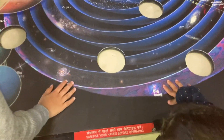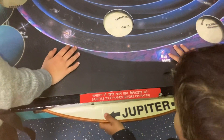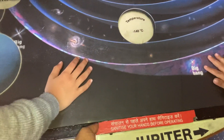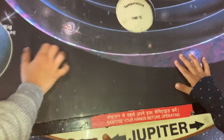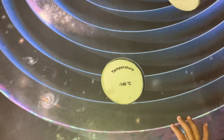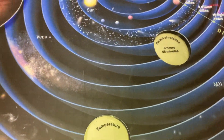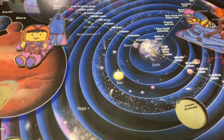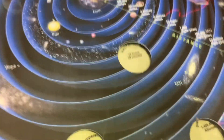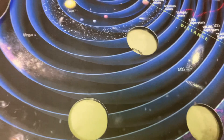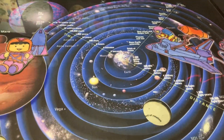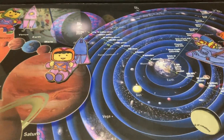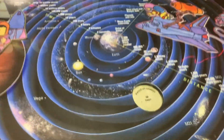On this model, we can check the information about each and every planet — for example, what is the temperature of that planet, how many moons it has, what is the gravitational force, etc.